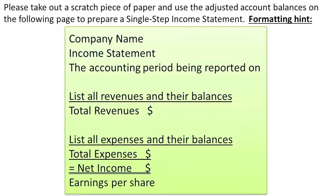List all expenses and their balances and total them up. Take the total revenues, less total expenses, and you get net income. Also compute earnings per share, which will be net income divided by the thousand shares that are currently issued and outstanding.